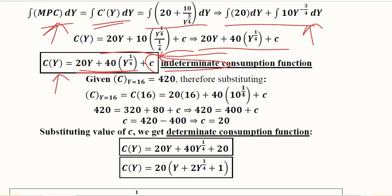Now we can use the given condition: if income is 16 units, consumption is 420 units. We substitute this condition where Y equals 16. We write 16 instead of Y on both sides of the equation and then solve.